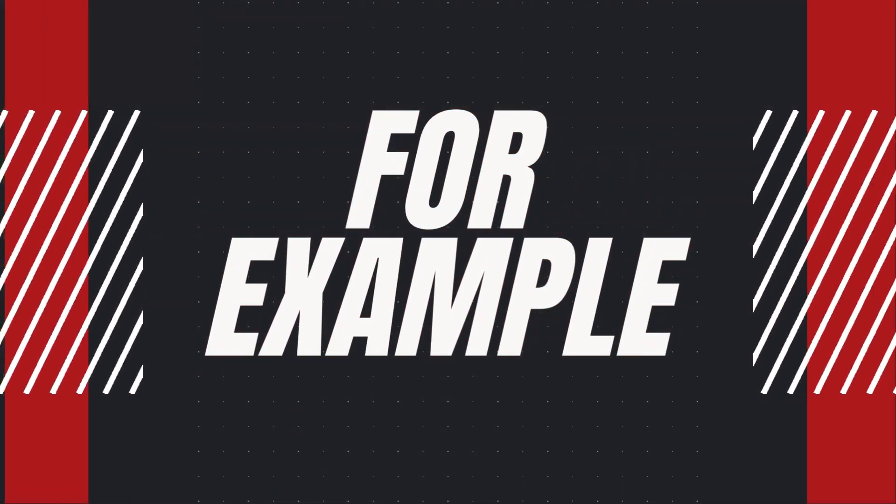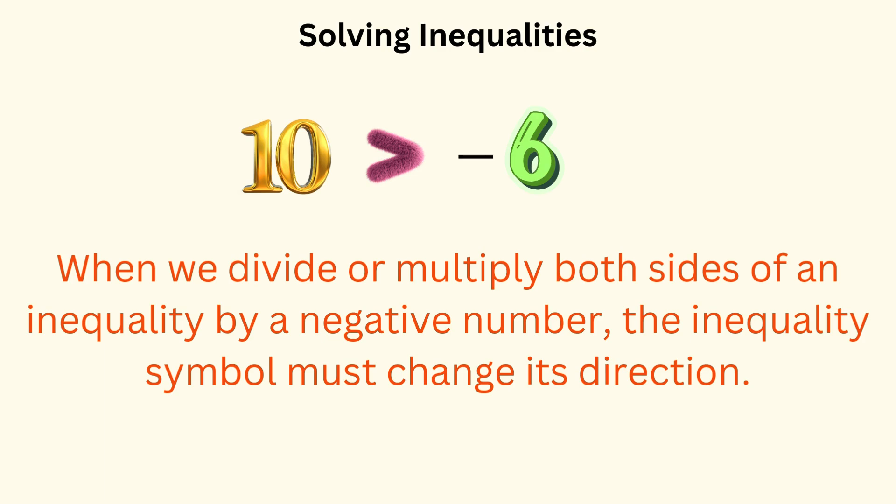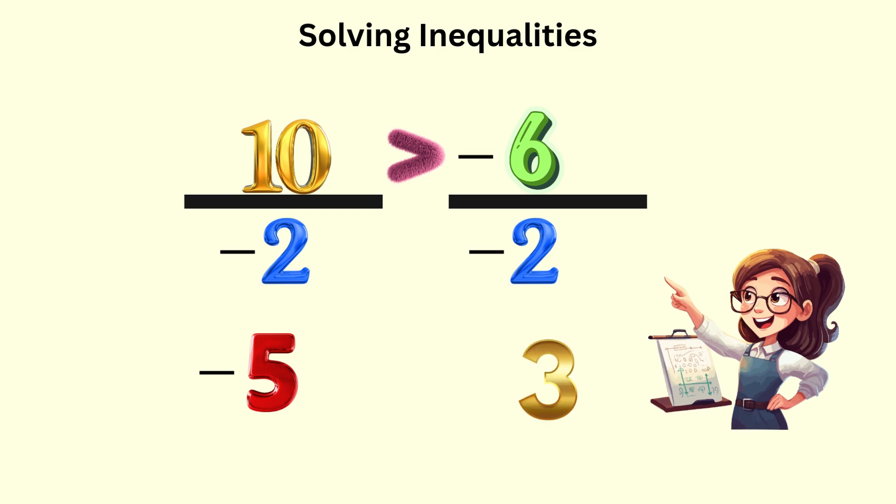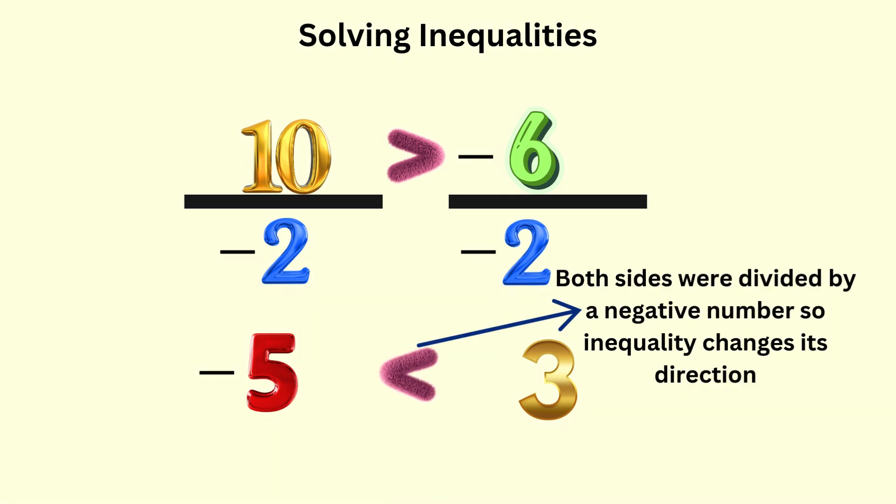For example, we all know that 10 is greater than negative 6. If we divide both sides by a negative number, like negative 2, we'll get 10 divided by negative 2, negative 5 on the right. On the left, we will get negative 6 divided by negative 2, which is positive 3. Now is negative 5 greater than positive 3? Definitely not. For the inequality to make sense, we'll need to change its direction, since negative 5 is actually less than positive 3.